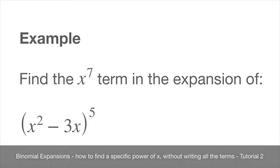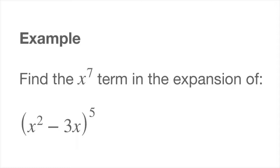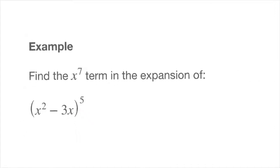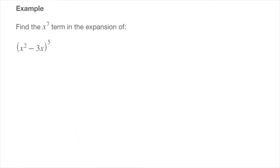We now work through a second example in which we find a specific power of x inside a binomial expansion without writing all of its terms. The example is the one we have here. We need to find the x to the power of 7 term in the expansion of x squared minus 3x, all of which is being raised to the power of 5. I'll start by moving this question to the side and now we can get started.